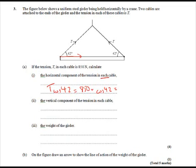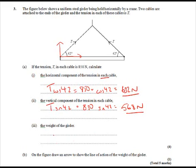And the vertical component is T sine 42, this component here. So you could do T cos 58 if you like, it's the same force. So this is 850 sine 42, and that comes to 568 newtons. And then to get the weight of the girder, well these two upwards forces are balanced by the downwards force, the weight of the girder. So all you've got to do here is two lots of 568 comes to 1136 newtons.